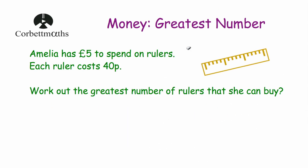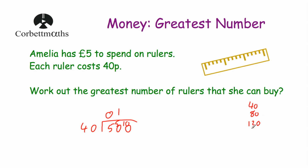Each ruler costs 40p and she's got £5, which is 500 pence. If we see how many 40s go into 500, that tells us how many rulers she can buy. So we do 500 divided by 40: how many 40s go into 5 — that's 0 remainder 5; how many 40s go into 50 — that's 1 remainder 10; how many 40s go into 100 — the multiples of 40 are 40, 80, 120, so two 40s make 80, remainder 20. That gives us 12 remainder 20. She can buy 12 rulers and has 20p left over.